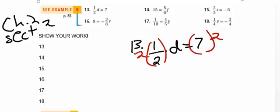And then you'll see that on the left side, the 2 over the 2 would cancel, and I'd be left with my answer of D equals 7 times 2 is 14.